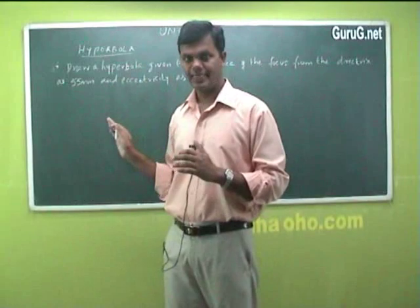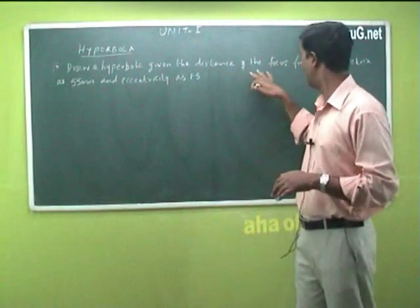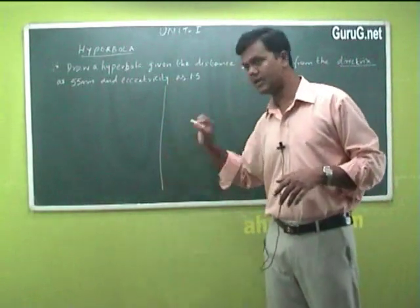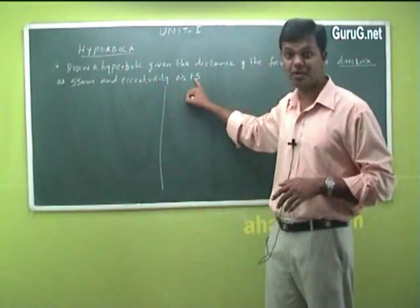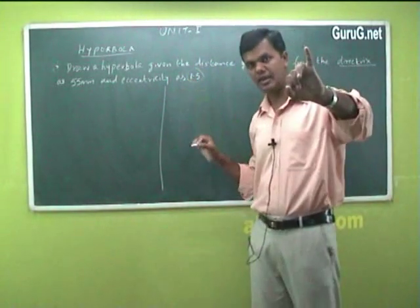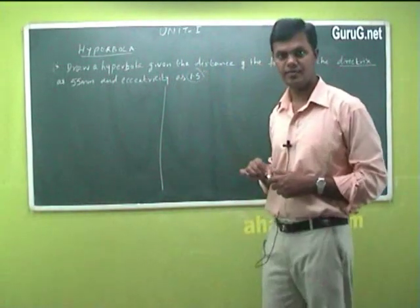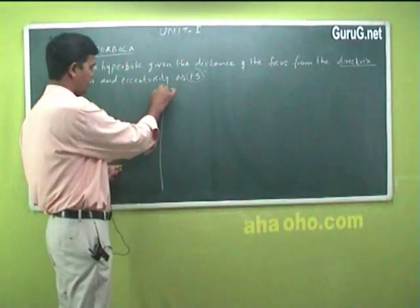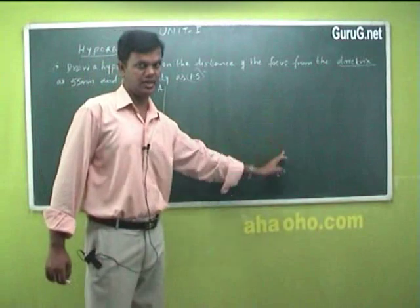This hyperbola is again, see one question is given: draw a hyperbola given the distance of the focus from the directrix again. So we know what the directrix means? The basic straight line directrix as 55 millimeter and eccentricity as 1.5. So this is important value. We should differentiate between ellipse, then parabola, then now hyperbola. It is 1.5 value is given.